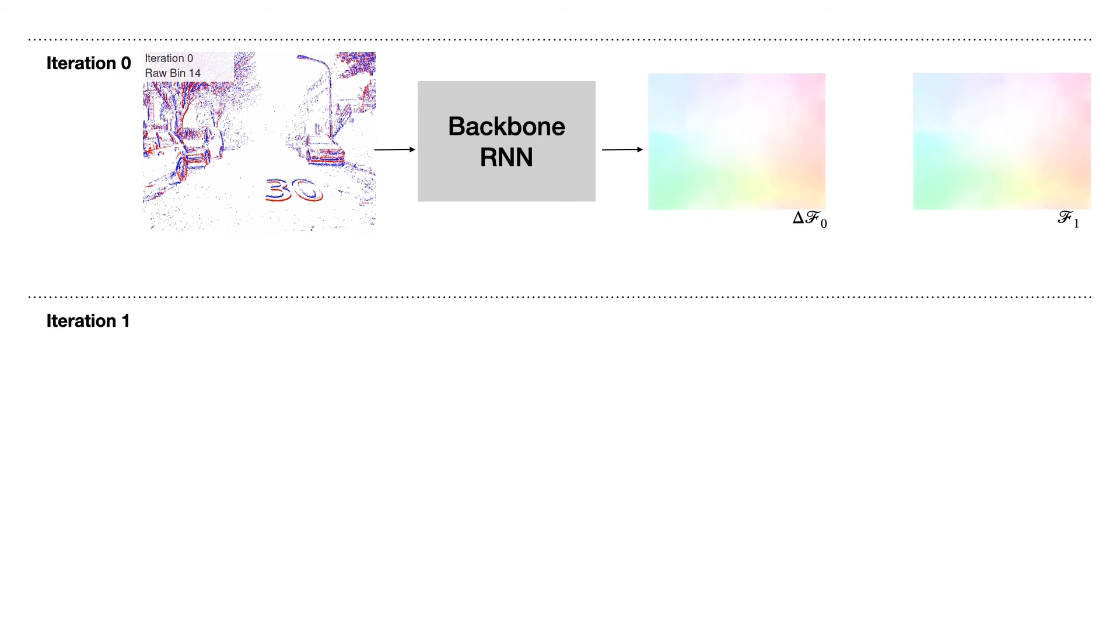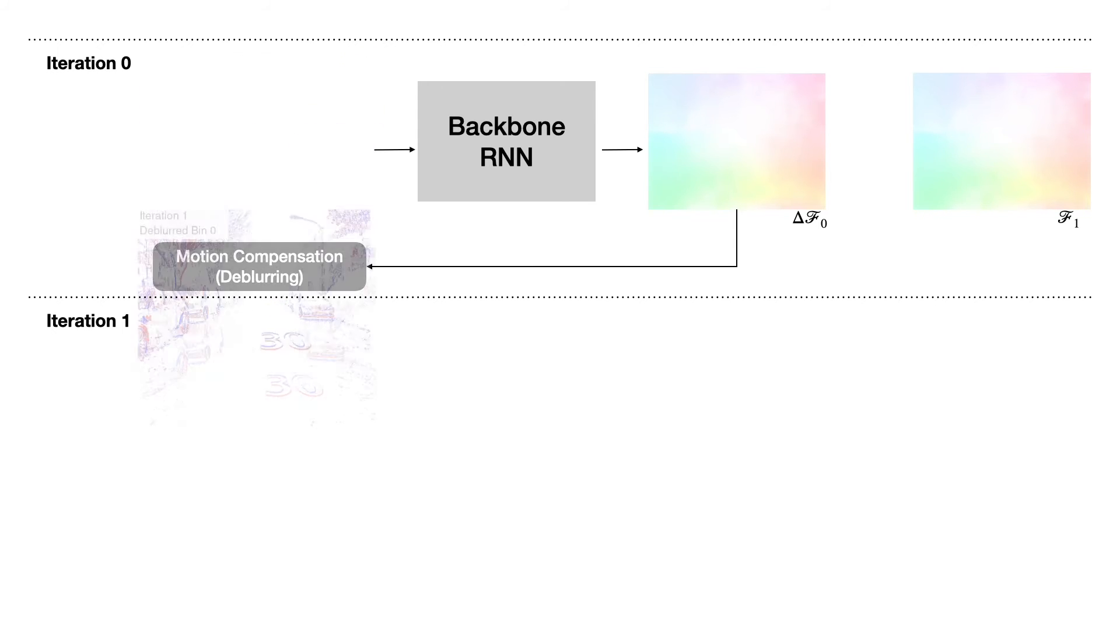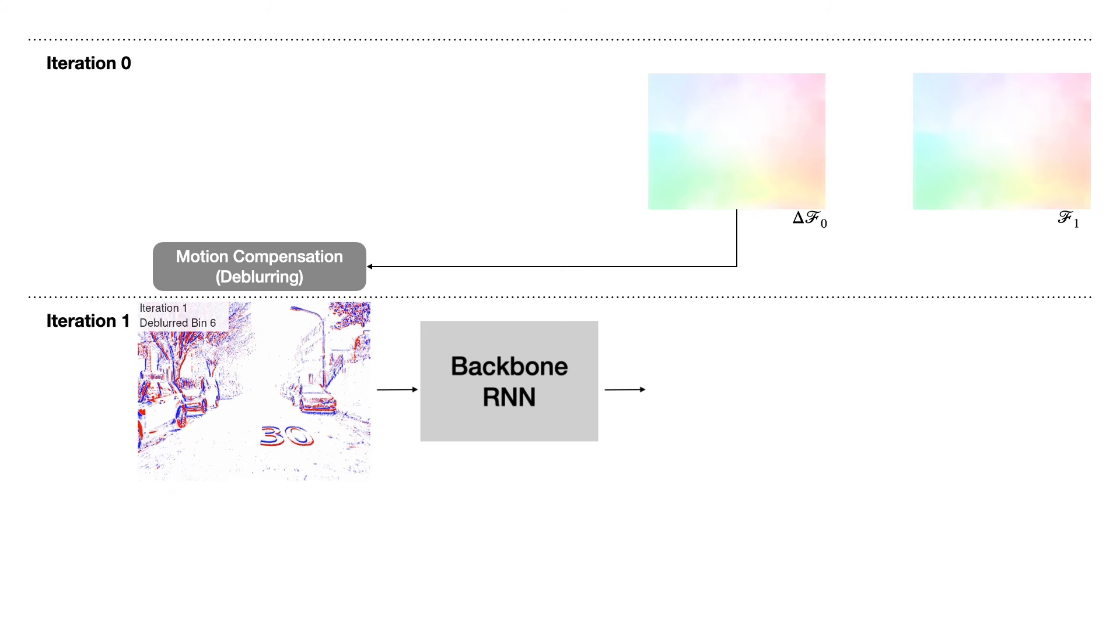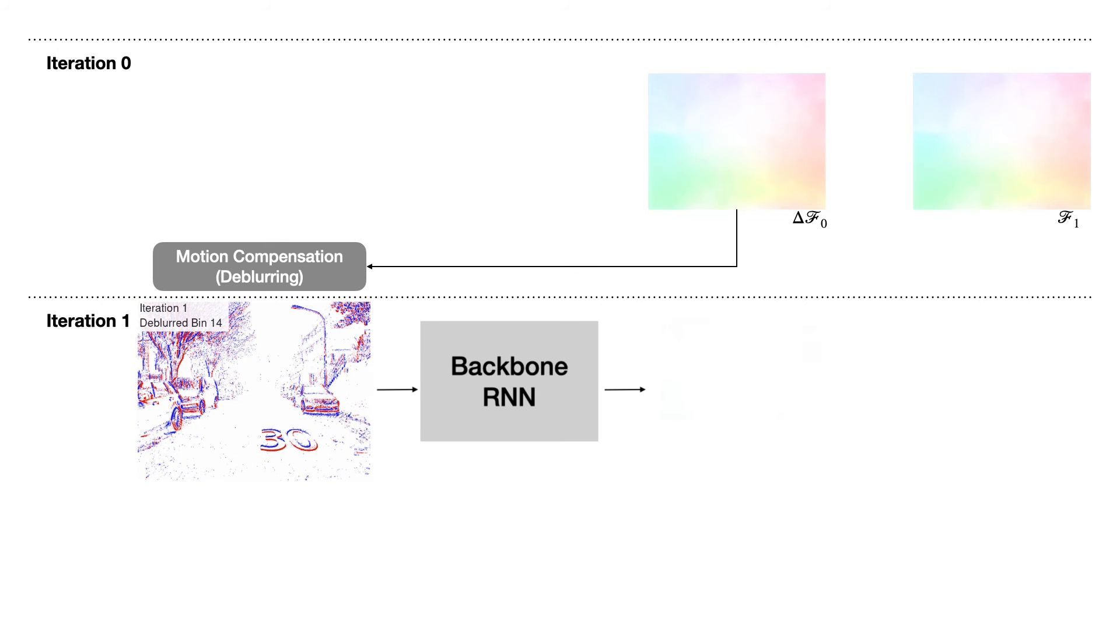At the beginning of a new iteration, the event bins at the previous iteration are motion compensated, or de-blurred according to the previous delta flow, resulting in less blurred bins. The motion compensated events are then passed through the same backbone for a new delta flow F1, reflecting the residual motion of events in the input.